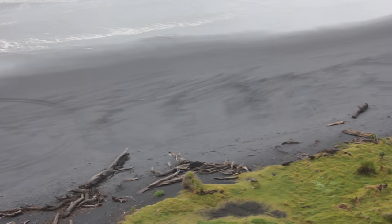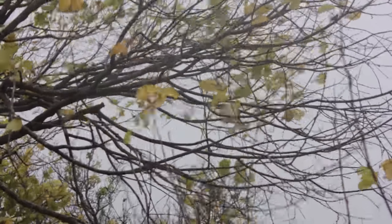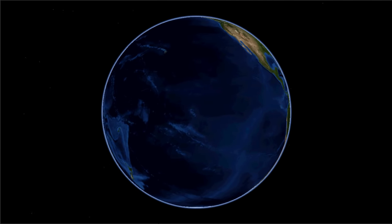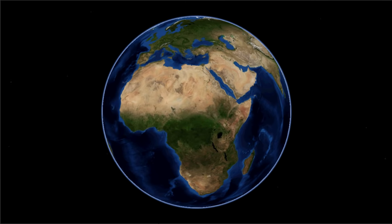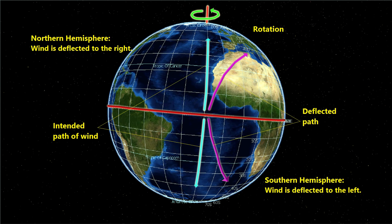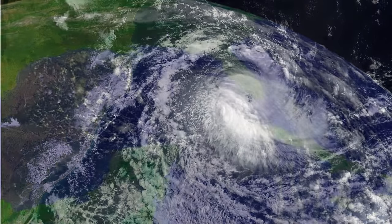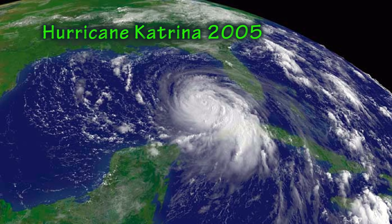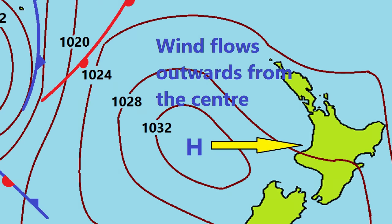Weather maps also show wind conditions. Wind is the movement of air, and it moves from high pressure areas towards low pressure areas. Winds do not travel in a straight line due to the Coriolis effect, which is created by the rotation of the Earth. The Coriolis effect deflects wind to the left in the southern hemisphere and to the right in the northern hemisphere. In the southern hemisphere, wind flows clockwise around low pressure systems and anti-clockwise around high pressure systems, while in the northern hemisphere wind flows anti-clockwise around low pressure systems and clockwise around high pressure systems.